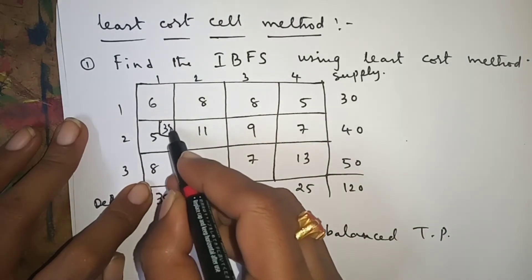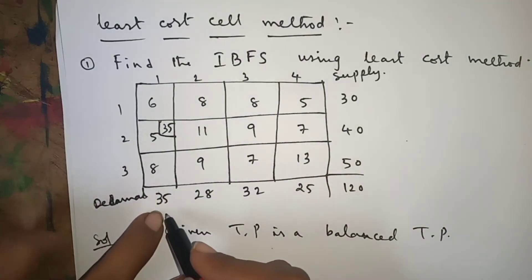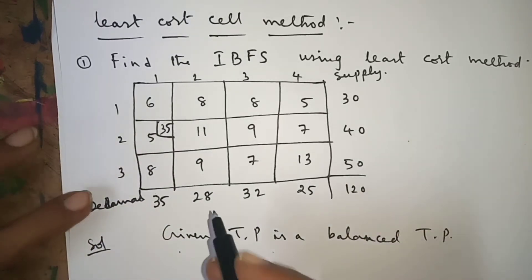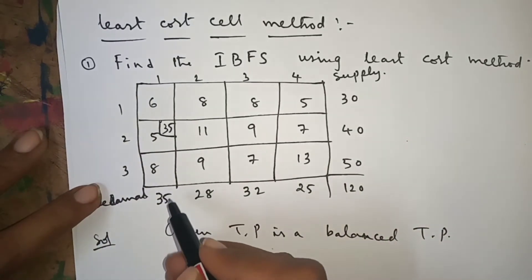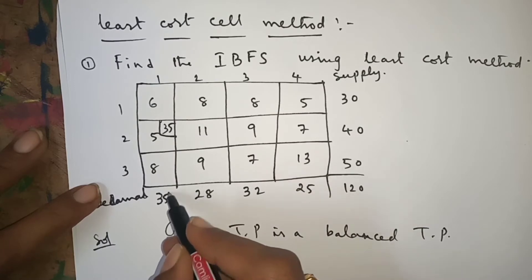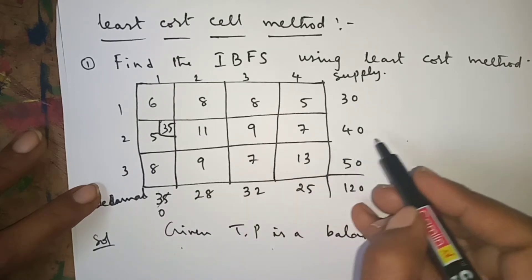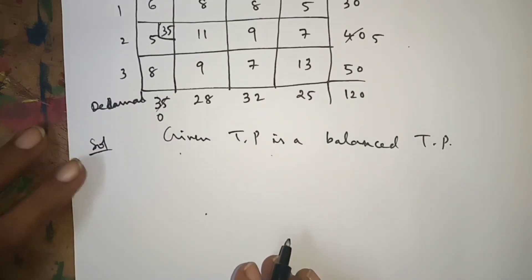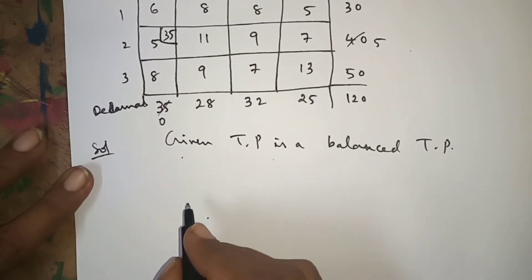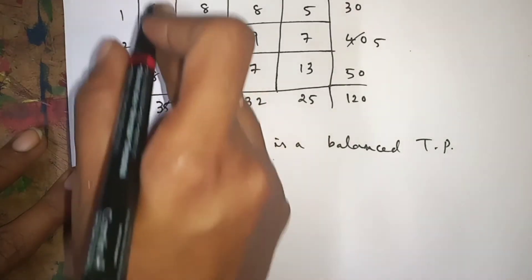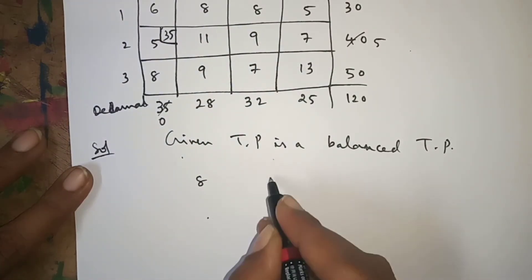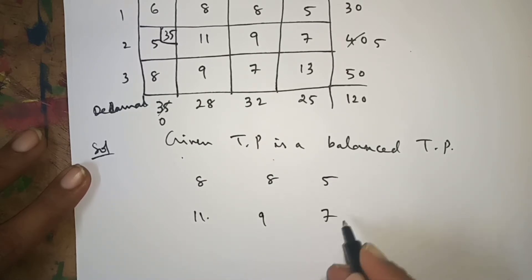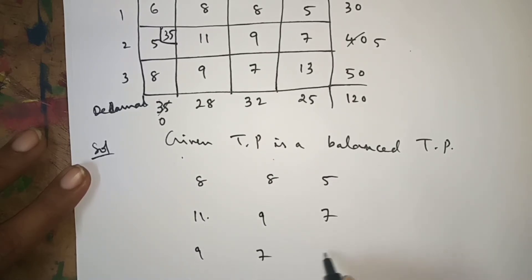The demand is 35 and the supply is 40. Out of these two, the minimum is 35. So I used 35 here — remaining supply is 5. Wherever you get 0, just omit that column. Here I got 0, so I will omit the first column. The remaining cost values are: 8, 8, 5, 11, 9, 7, 9, 7, 13.